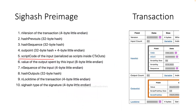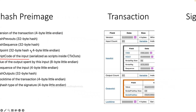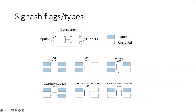By default, the six combinations are the only possibilities. But using customized signatures, the message can be arbitrary — it can cover this field and that field but not another, which is not possible with default sighash flags alone.